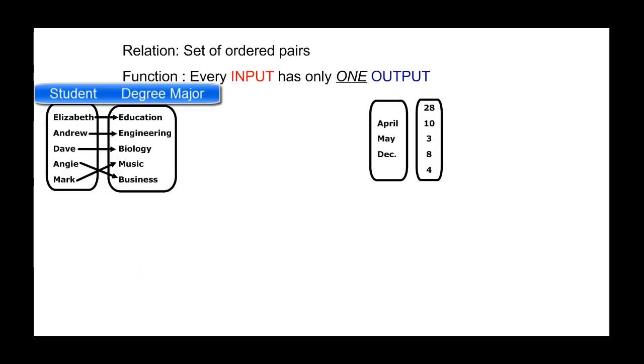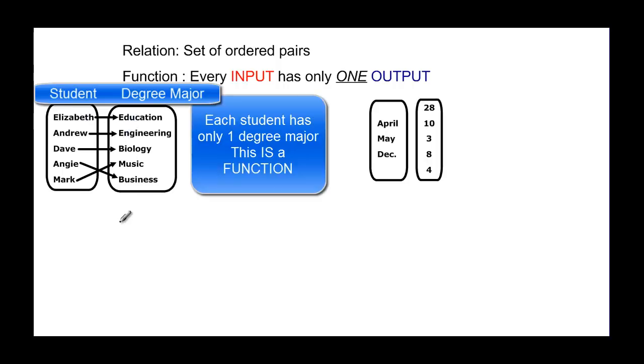But every input can only have one output. So if we look at this first example, these are students and over here we have their degree that they're going for in college. Elizabeth is going for education, Andrew is going for engineering, Dave is going for biology, Angie is going for business, and Mark is going for music. Now each one of those is only going for one degree so that makes it a function.